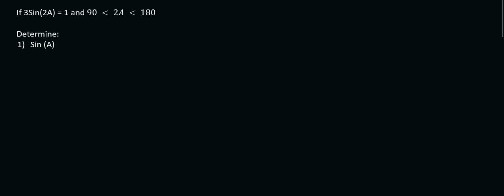So here's an interesting one, they tell us that 3 sin of an angle, now this angle is 2A, that's equal to 1, and they tell us that this angle is between 90 and 180. So what we do is we need to identify where this is first of all. So if we take 3 sin of 2A, we need to get the sin part by itself, so that's sin 2A equals to a third.